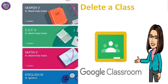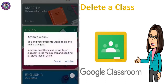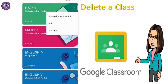Look at these three dots on the upper right — click, then click Archive. You and your students won't be able to make changes, but you can view this class in archived classes from the main menu. You can also find all class files in Drive. Click Archive.